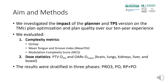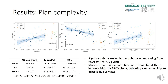The results were stratified based on the optimization algorithm used in the clinic. In this slide, you can see the scatter plots of the three complexity metrics evaluated for each plan, plotted against the plan date. The colors represent the three phases which underwent interclinic change. We found a significant decrease in plan complexity when moving from PRO3 to the PO algorithm, and also moderate correlations with time were found for all three indices within the PRO3 phase, indicating a reduction in plan complexity which could be due to the planner's experience only.